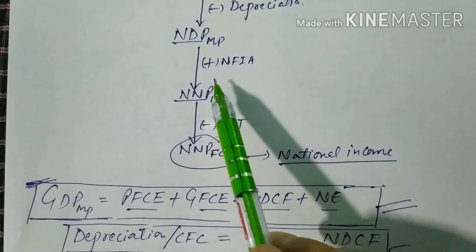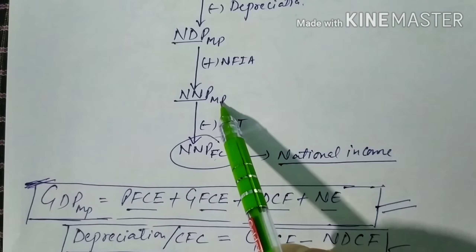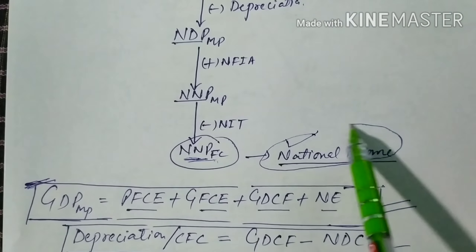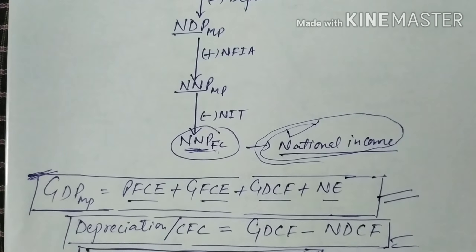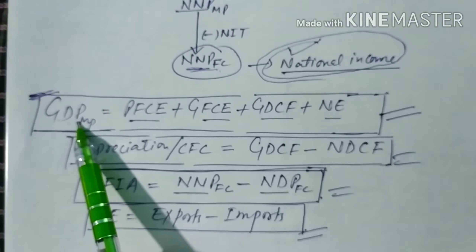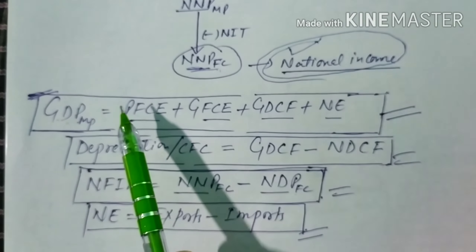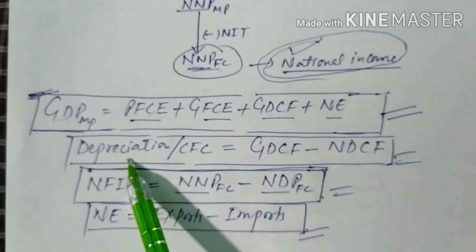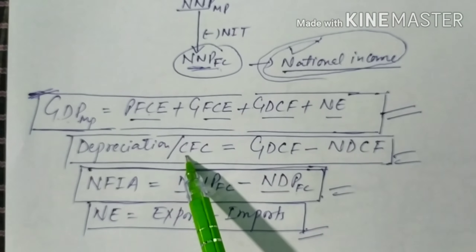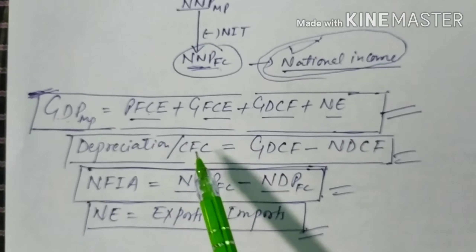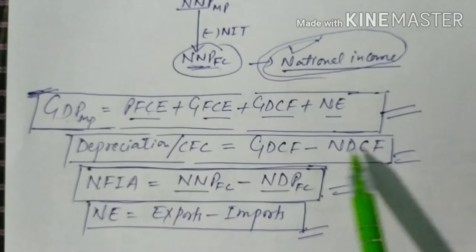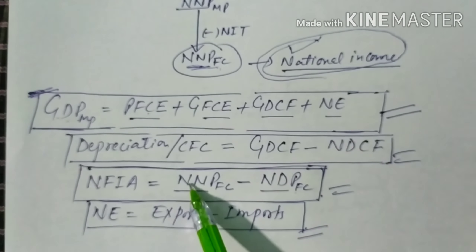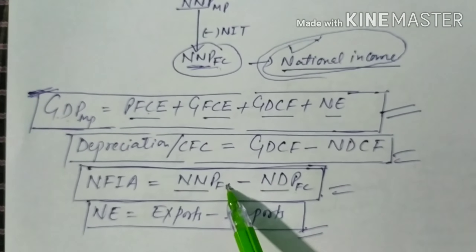If depreciation is not given, you can derive it as gross domestic capital formation minus net domestic capital formation. If NFIA is not given, you can find it as NNPFC minus NDPFC, or NNPMP minus NDPMP. Net exports equals exports minus imports.